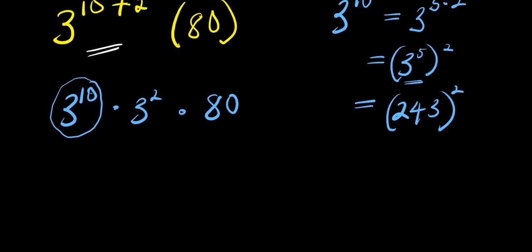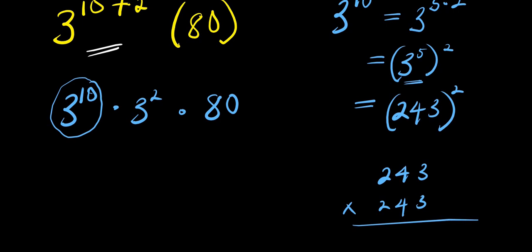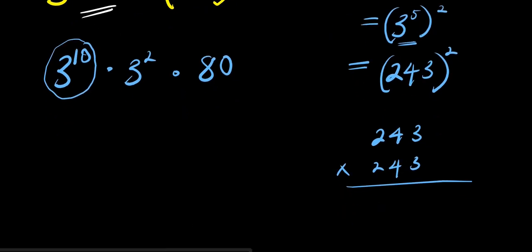This will simply give us two hundred and forty-three times two hundred and forty-three. Multiplying: three times three is nine; three times four is twelve, carry one; three times two is six, plus one is seven. Four times three is twelve, carry one; four times four is sixteen plus one is seventeen; four times two is eight, plus one is nine.